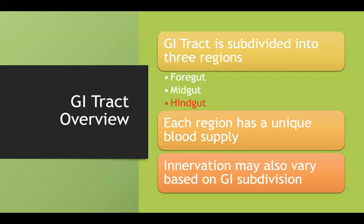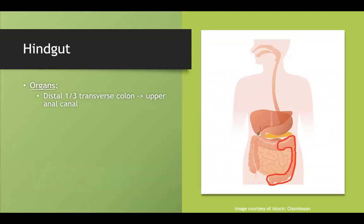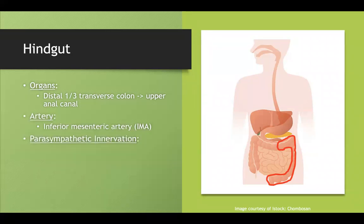Our last region, the hindgut, travels from the distal one-third of the transverse colon to the upper anal canal, which is highlighted to your right. This is supplied by the inferior mesenteric artery. And instead of the vagus nerve, pelvic splanchnic nerves supply the innervation to this region.